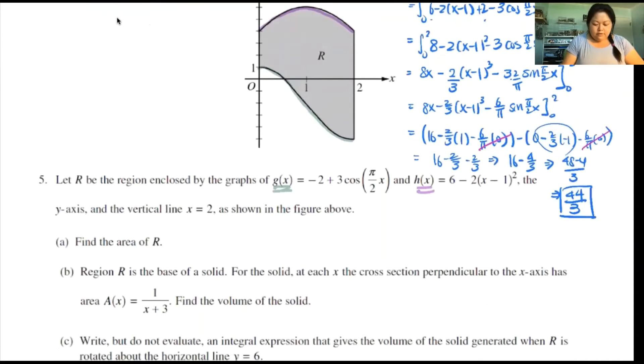Region R is the base of a solid. For this solid, at each x, the cross section perpendicular to the x-axis, so we have some cross sections here going perpendicular to the x-axis. So this is where it's going. It's the area of 1 over x plus 3. Find the volume of solid. So the thing is here is that the area is already defined for you, so you really don't have to worry about the top minus bottom. It doesn't tell you how to use the top minus bottom. It says the area is already defined. So all you have to do, believe it or not, all you have to do for this problem is just know the fact that your integral went from 0 to 2 because it is perpendicular to the x-axis.